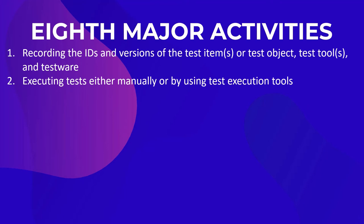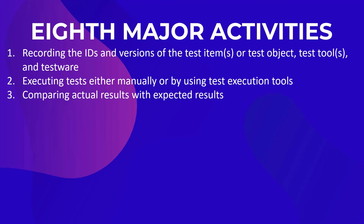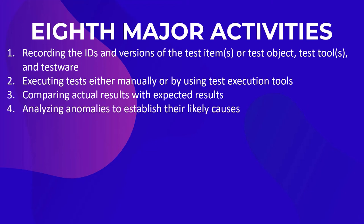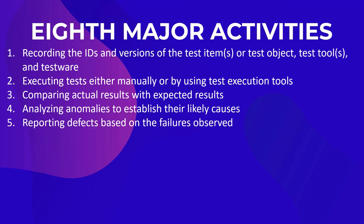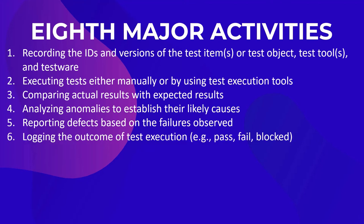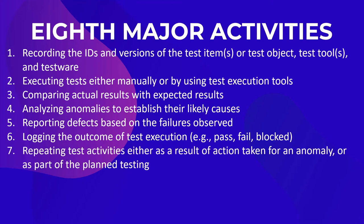The second activity is executing tests either manually or by using test execution tools. The third activity is comparing actual results with expected results. The fourth activity is analyzing anomalies to establish their likely causes. The fifth main activity is reporting defects based on the failures observed. The sixth main activity is logging the outcome of test execution. The seventh main activity is repeating test activities either as a result of action taken for an anomaly or as part of the planned testing.